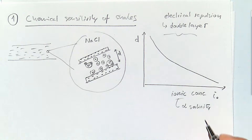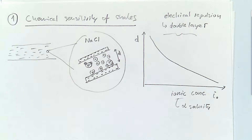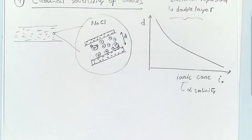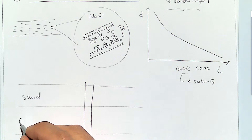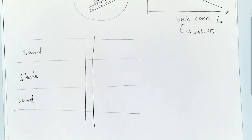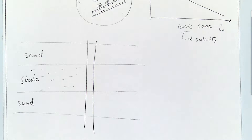The higher the salinity, the lower the equilibrium distance. Now this is a problem because in drilling operations, or when you inject a fluid into a porous medium, you usually do not inject the fluid with the same ionic concentration as the original. For example, if you are drilling through a section that is sand, shale, and sand, and you're drilling with a relatively fresh mud, what is going to happen to the shale?